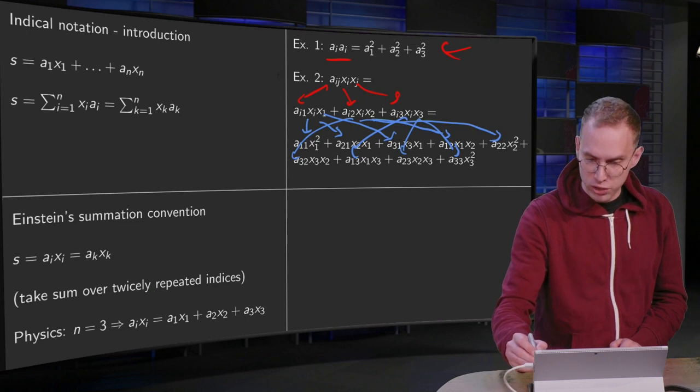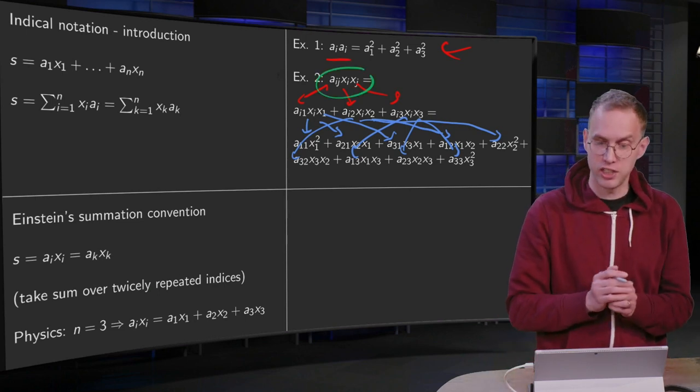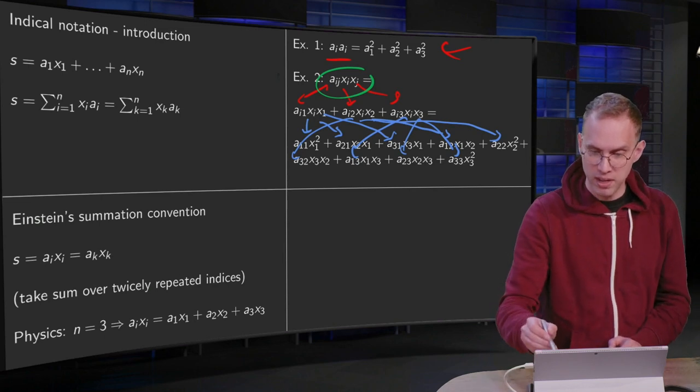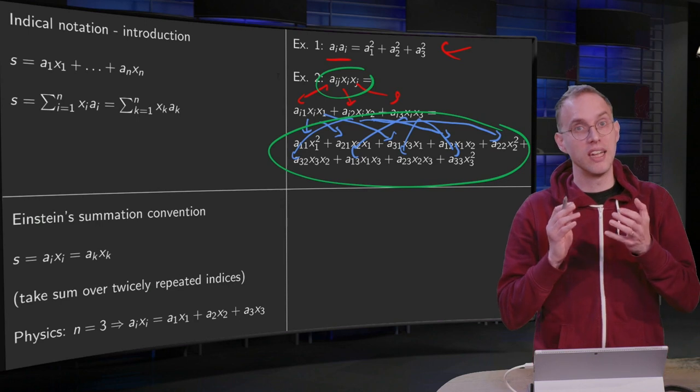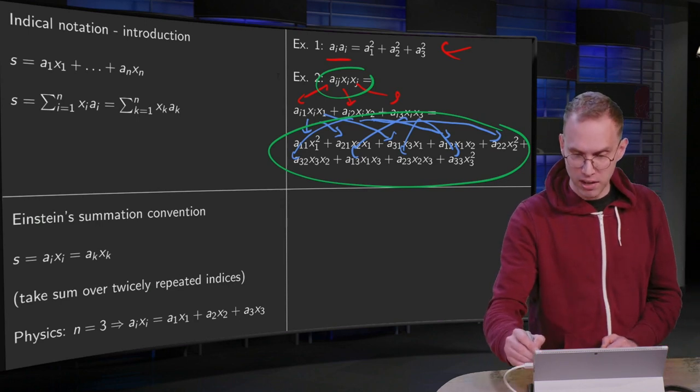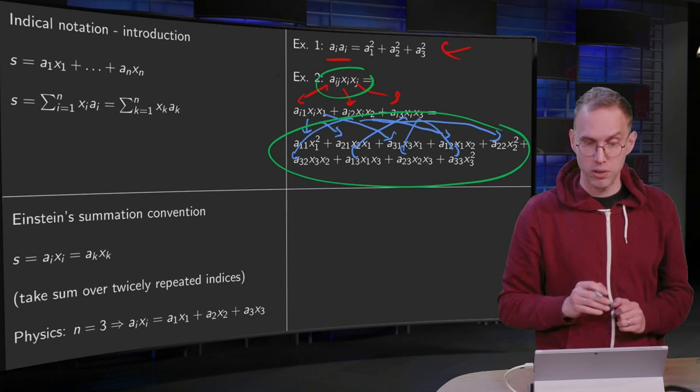So this very short expression over here, aᵢⱼxᵢxⱼ, is actually the same as this pretty lengthy expression of nine terms. So this index notation really allows us to write long expressions, long terms, a lot shorter.